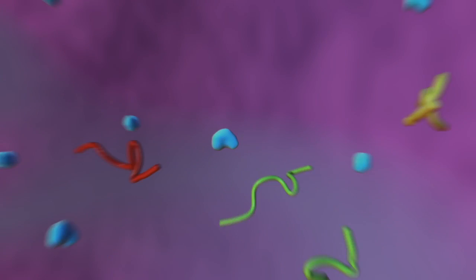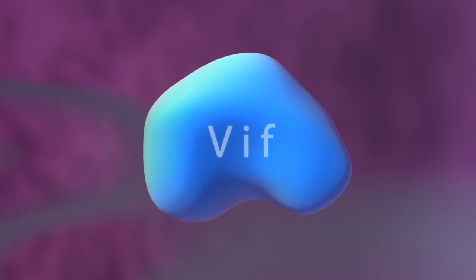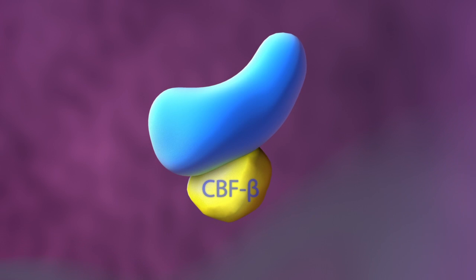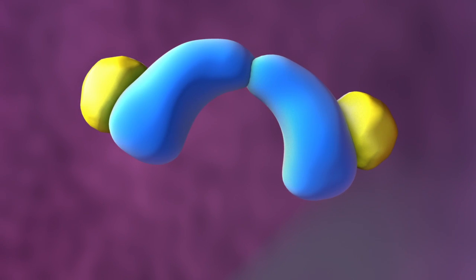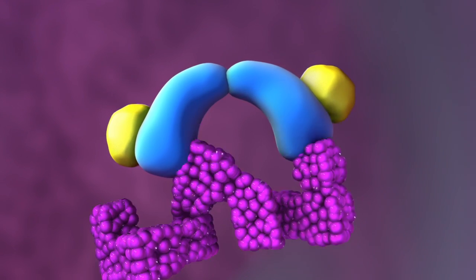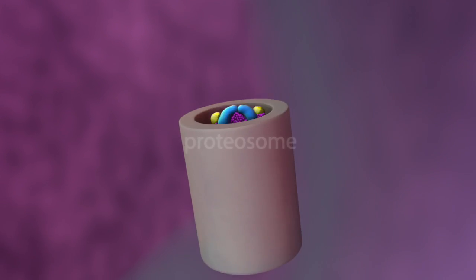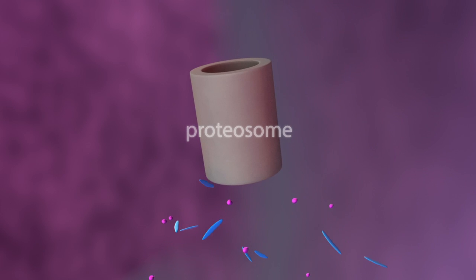One of these viral proteins known as viral infectivity factor or VIF is a misshapen and unstable protein unless it interacts with another cellular protein known as CBF-beta. This in turn enables VIF proteins to interact to form dimers that bind to ApoBEC3G and trick cells into targeting A3G for digestion in the proteasome.